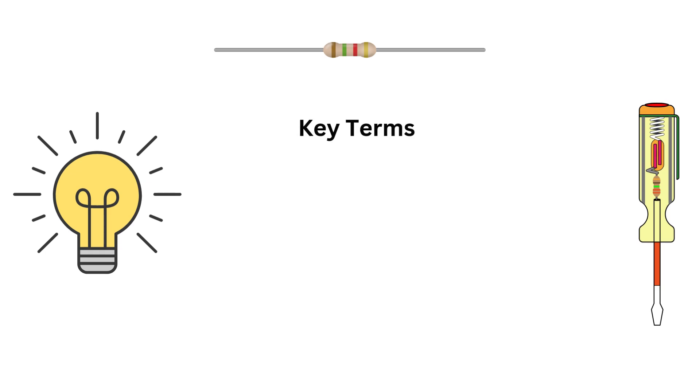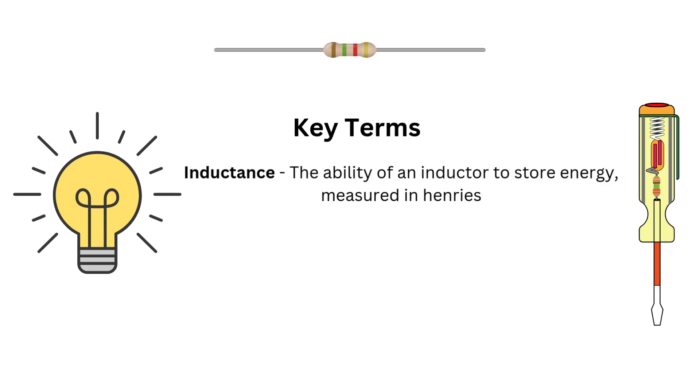Before we wrap up, let's go over some key terms you should know. Inductance, the ability of an inductor to store energy measured in henrys. Magnetic field, the area around the inductor where magnetic force can be detected.